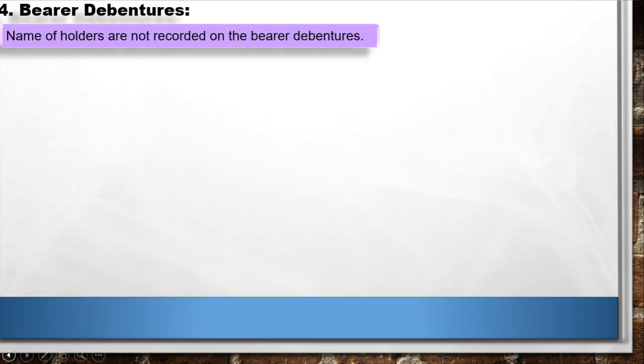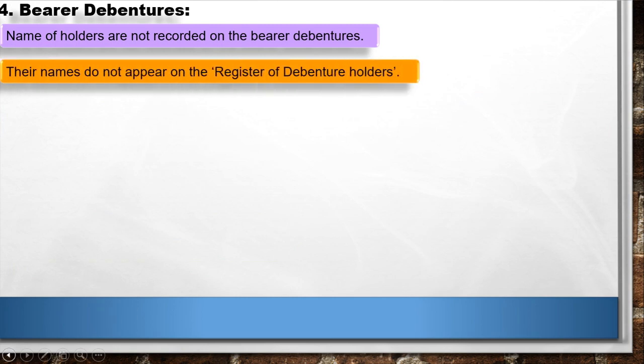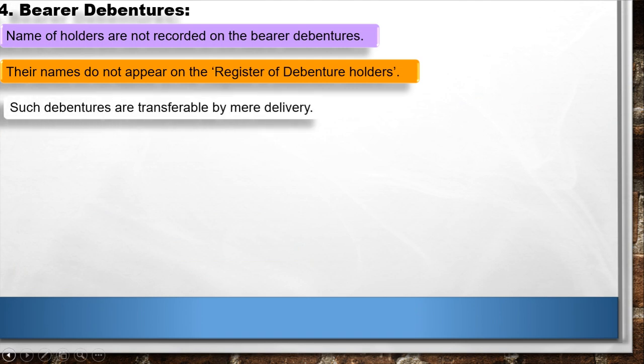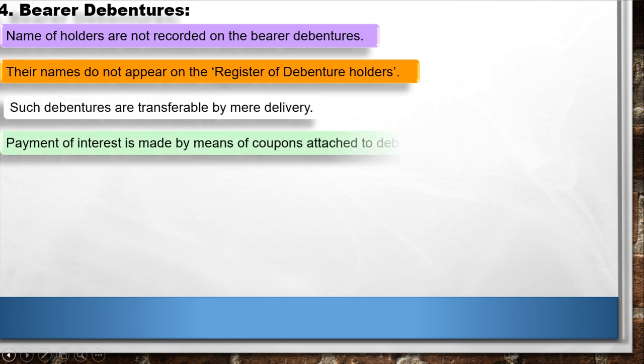4. Bearer Debentures: The names of holders are not recorded on bearer debentures, nor do they appear on the register of debenture holders. Such debentures are transferable by mere delivery. Payment of interest is made by means of coupons attached to the debenture certificate.